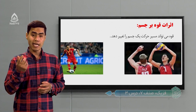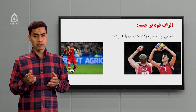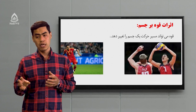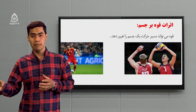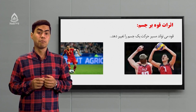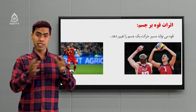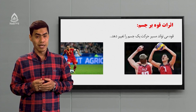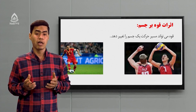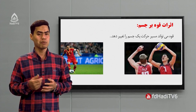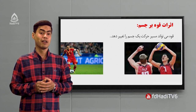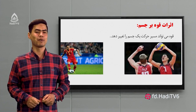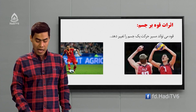تأثیر بعدی: قوه می‌تونه مسیر حرکت یک جسم را تغییر بده. در بازی فوتبال می‌بینید که می‌تونید توپ را از این سمت زمین به آن سمت زمین بفرستید، یعنی یک تغییر جهت انجام بدید. این کار چگونه انجام می‌دید؟ با وارد کردن قوه. در بازی والیبال هم همچنین.